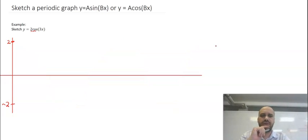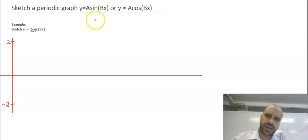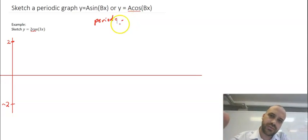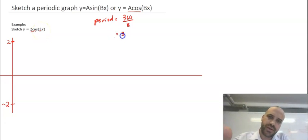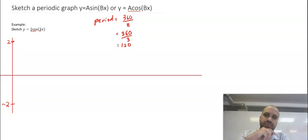What about its period? Remember that period equals 360 divided by B. We know the B value is 3, so period equals 360 over 3 equals 120. That means that this graph is going to repeat every 120.